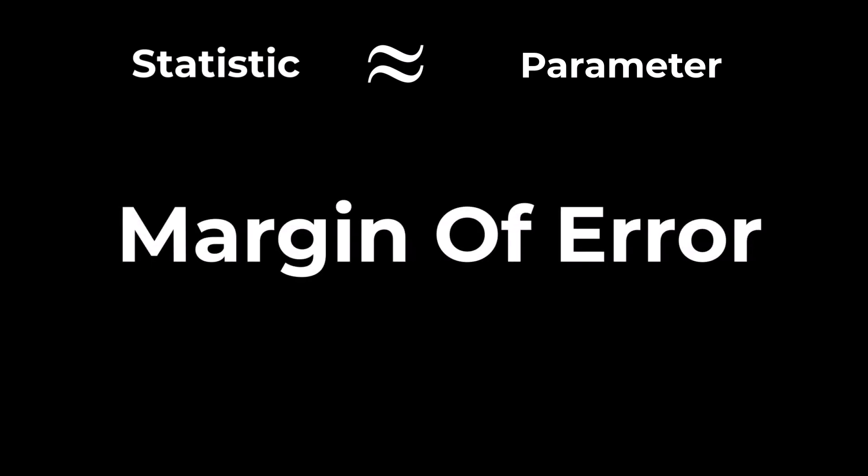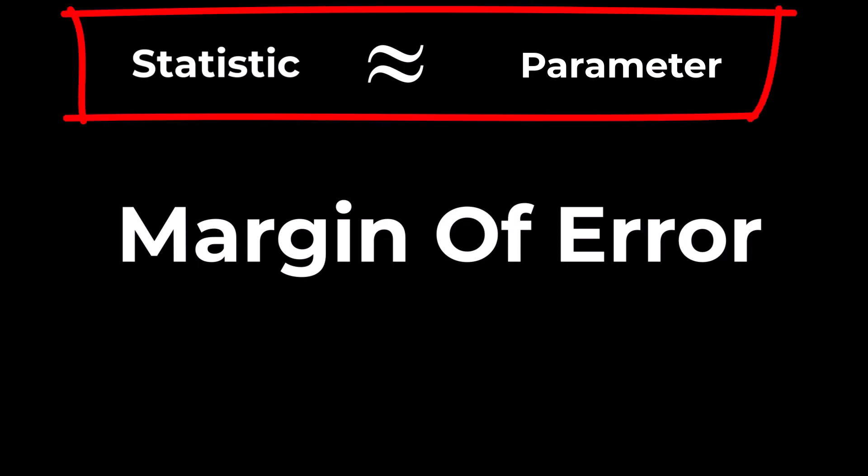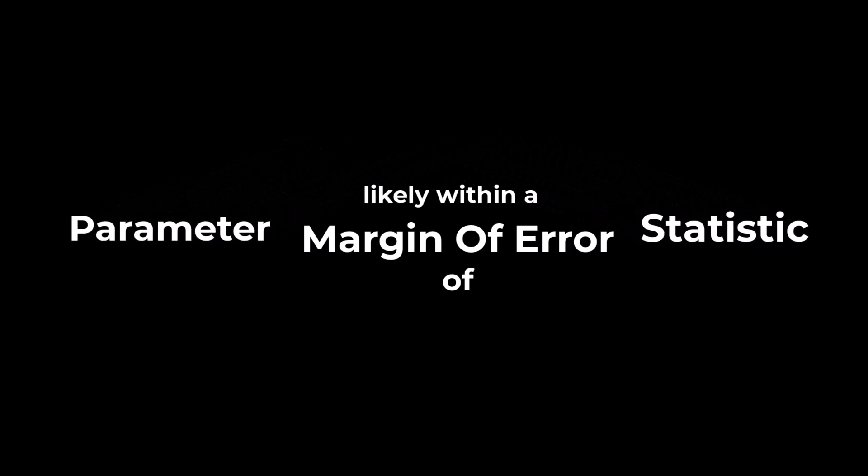It's called a margin of error. So when we say a statistic is about equal to a parameter, what we really mean is the parameter is likely within a margin of error of the statistic.